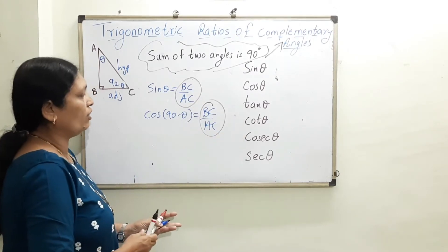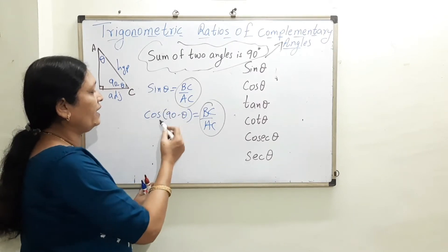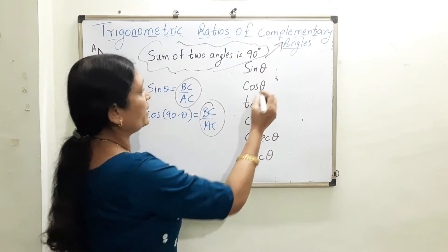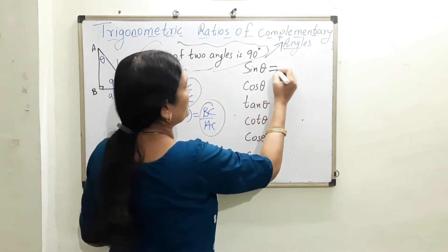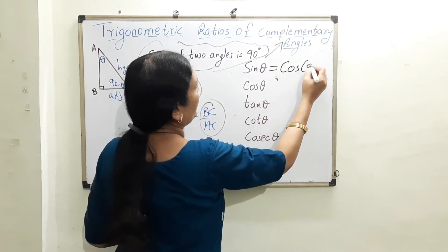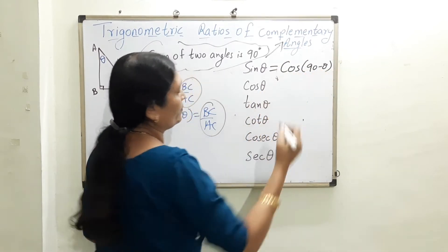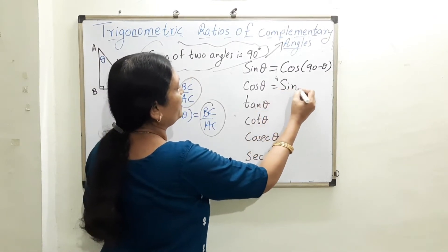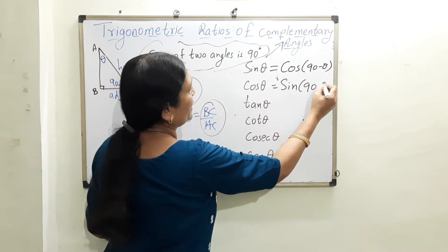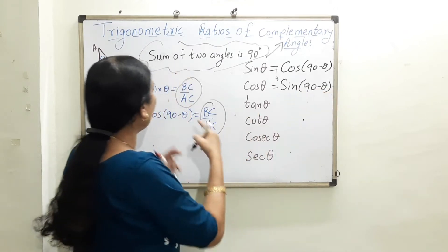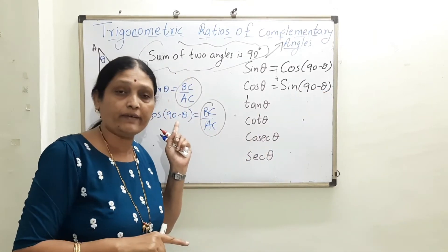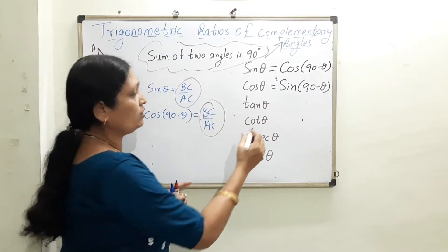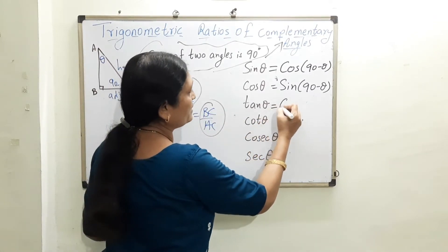So sin and cos are complementary ratios of each other. Therefore, sin θ = cos(90 − θ) and cos θ = sin(90 − θ). I want you to derive this yourself — one I have explained, and if you derive the other, you will remember it very well.